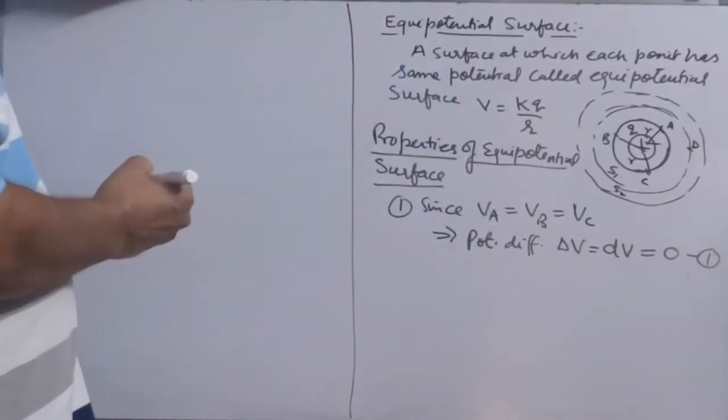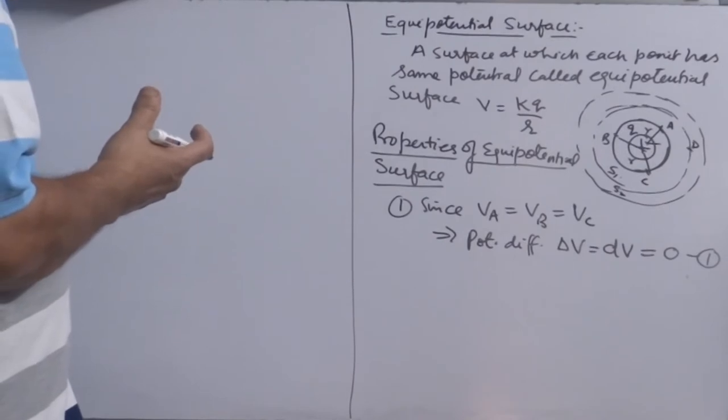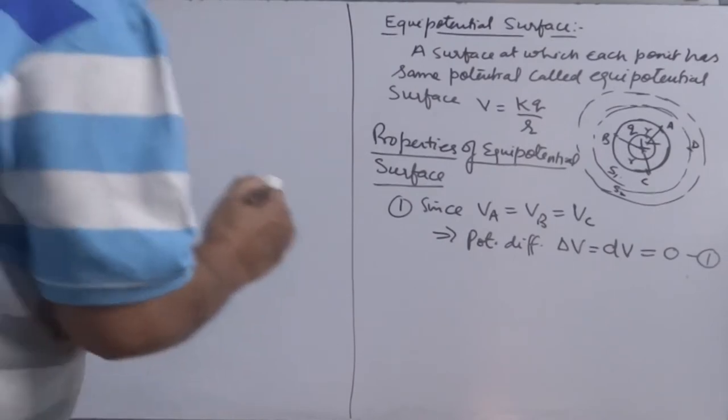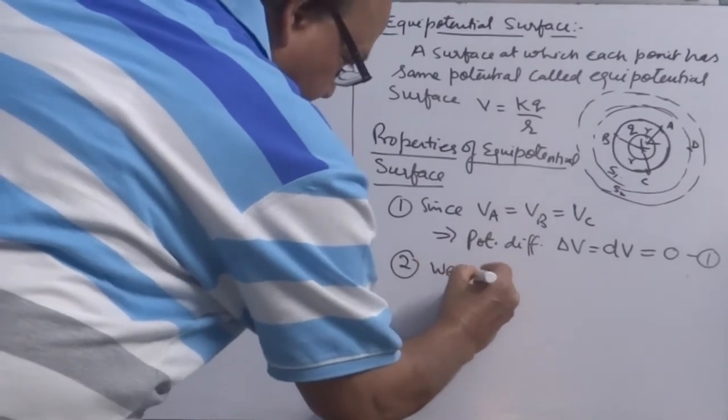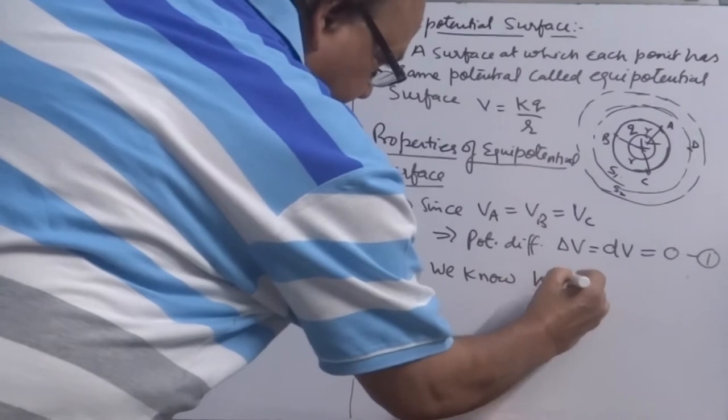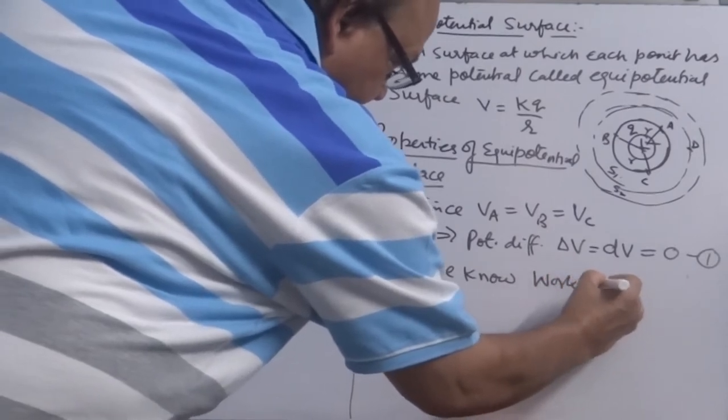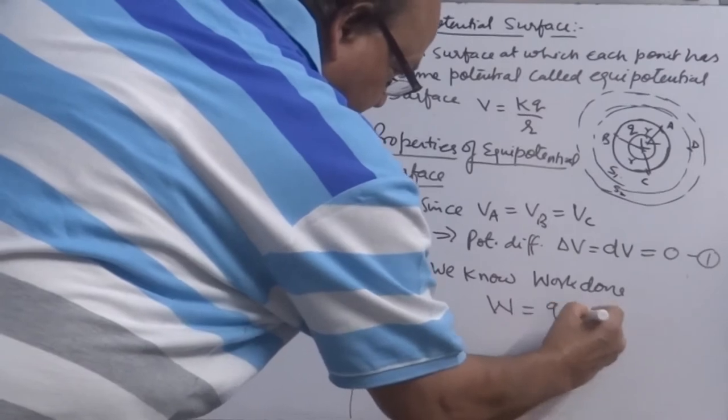So, the potential difference between any two point lying on equipotential surface is 0. Second, you can say we know work done.